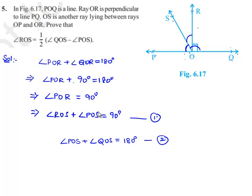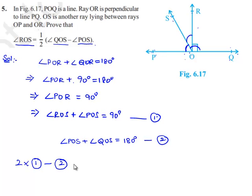Let us name it as equation number 2. Now, in order to make the equation in terms of angle ROS, angle QOS, and angle POS, we need to multiply equation 1 by 2 and subtract equation number 2 from it.